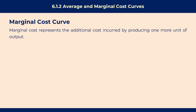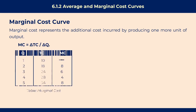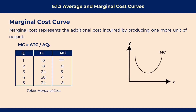Now let's talk about the marginal cost curve. Marginal cost represents the additional cost incurred by producing one more unit of output — that is, if we produce an extra unit of output, what will be the cost of that extra unit? The formula for marginal cost is: change in total cost divided by change in quantity. From the table, the marginal cost of the first unit is null because total cost and quantity are not changing. On the graph, the marginal cost curve is typically U-shaped.